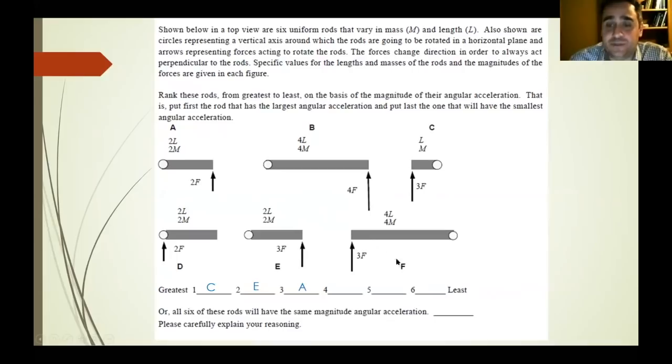That means we got to choose between E and A, and of course you want to go with the one that is the stronger force, which will cause a higher angular acceleration. So E, then A, and we're going to save D for last because it has no angular acceleration. Next is between B and F, and B has 4F, 4 times the force, and F has 3 times the force, so B and F, like that. And D is last. So this is how these things go. Let's try another one.